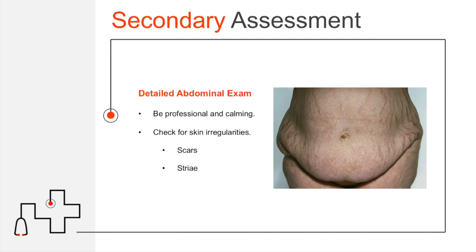Moving on to the secondary assessment — depending on how emergent the patient is, this will happen on scene or during transport. There should be no major changes in the head, neck, or chest that directly relate to a GI concern. The major effects from GI disease on the nervous, cardiovascular, or respiratory system result from pain, hypovolemia, or infection. Throat pain is possible if a patient has esophageal pathology or has been vomiting a lot, and heavy vomiting can also produce chest pain.